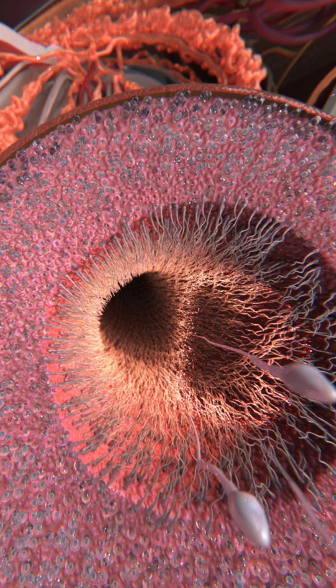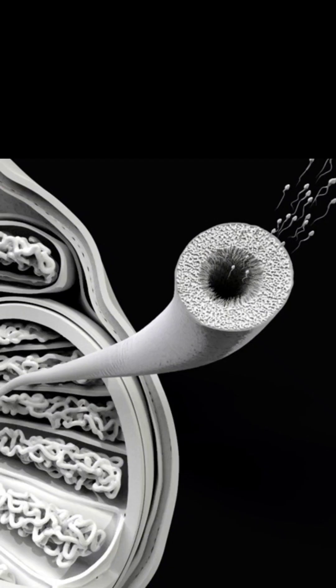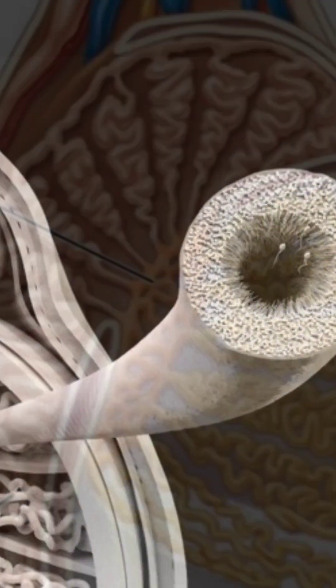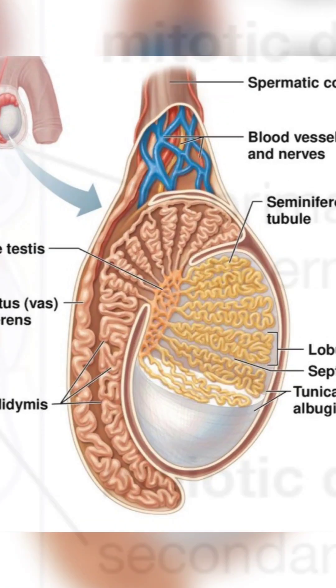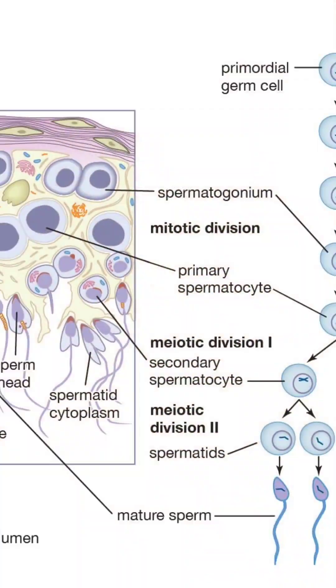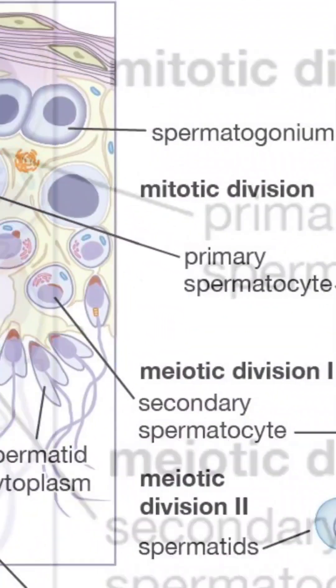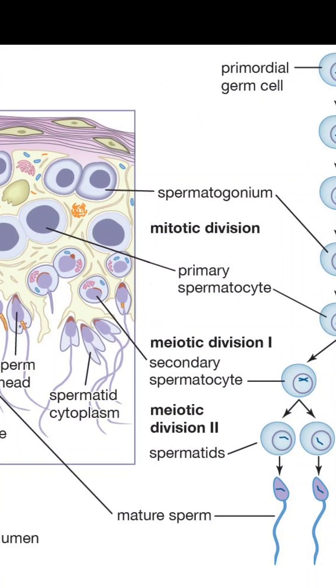Spermatogenesis refers to the process of production of sperm cells in the testes. It is a complex process that involves the division of germ cells through meiosis, resulting in the formation of haploid sperm cells.